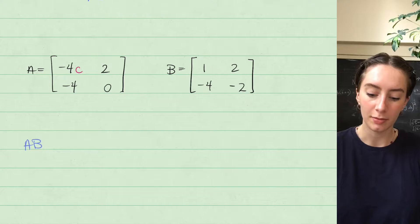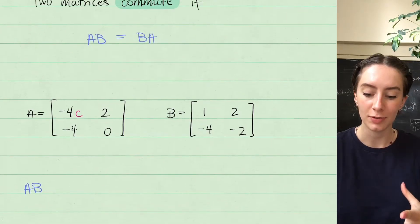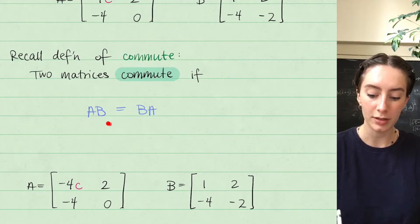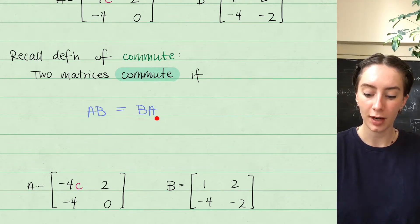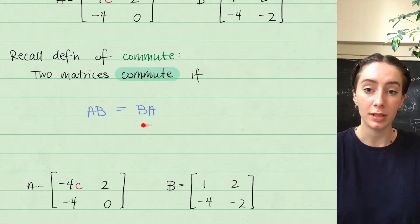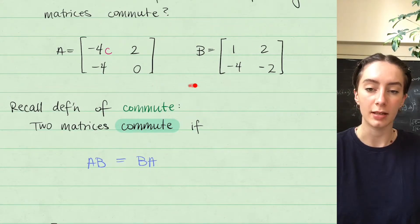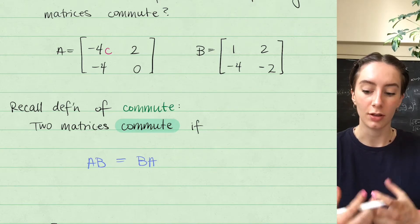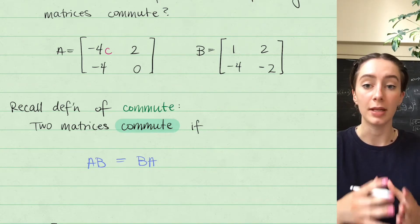Here's how we're going to solve this problem: first, we'll find the matrix AB, then find the matrix BA by doing the multiplication with our matrices A and B, and then set those matrices equal to each other so we can find the value of C that makes that work.